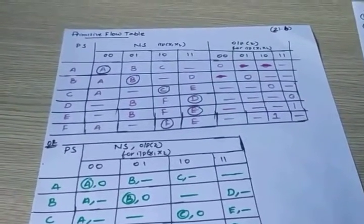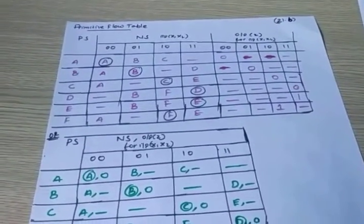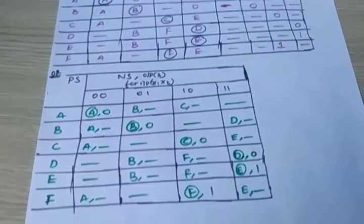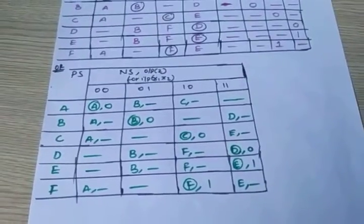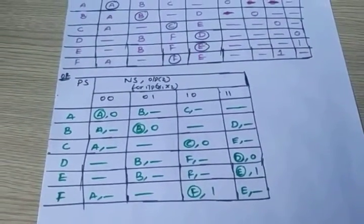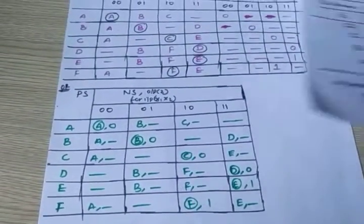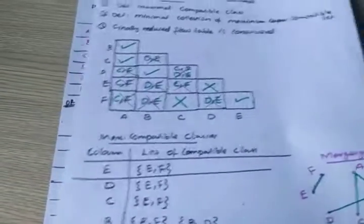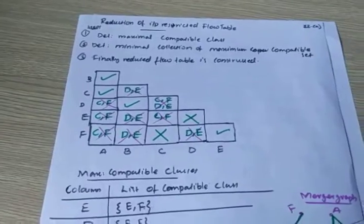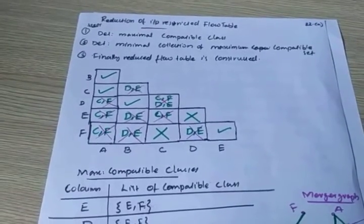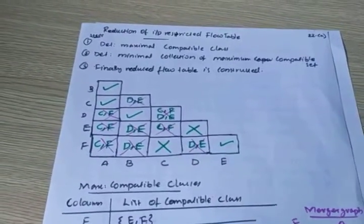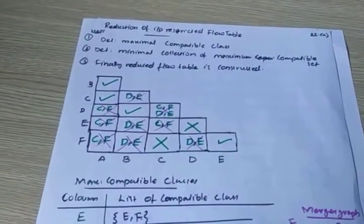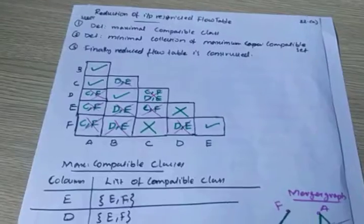In the previous lecture I discussed about the primitive flow table and how to draw it. In this section I will discuss about the reduction of the input restricted flow table.